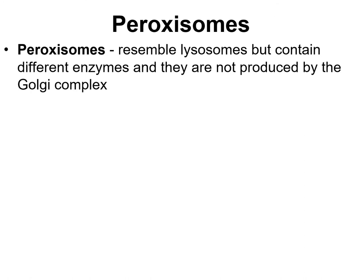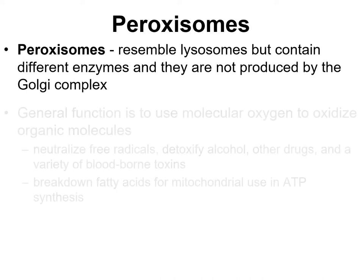The next organelles are the peroxisomes. You may think of hydrogen peroxide when you hear the term, and there is a connection. Peroxisomes are often confused with lysosomes because they are similar in structure, and they also contain enzymes — but they contain different enzymes called oxidase enzymes. Unlike lysosomes, peroxisomes are not produced by the Golgi apparatus.